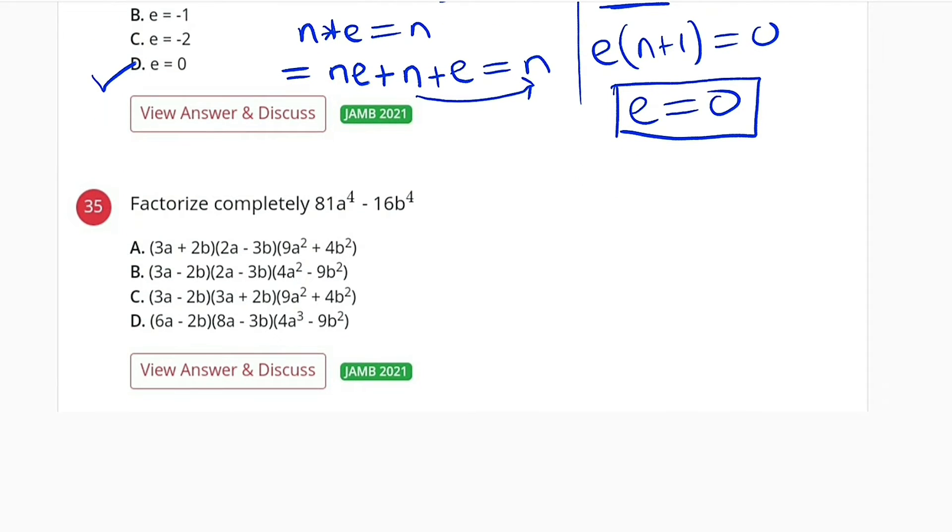Question number 35. We are asked to factorize completely 81a⁴ minus 16b⁴. I know that 81 can be written as 9 squared and 16 can be written as 4 squared.